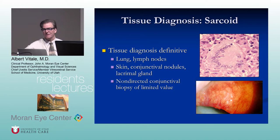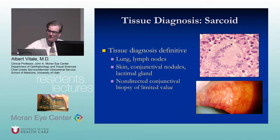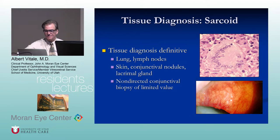It's useful to look for areas other than the lung to biopsy. Patients may have skin lesions — lupus pernio is a common finding. A skin biopsy is less invasive than bronchial biopsy. The lacrimal gland and conjunctiva can also be useful biopsy sites; about 15-20% of patients have conjunctival nodules, but blind conjunctival biopsy is not diagnostically useful.